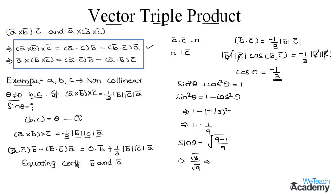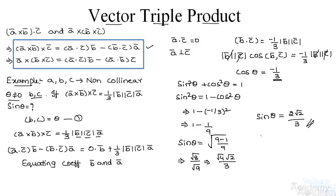We can write √8 = √4 · √2 = 2√2, and √9 = 3. Therefore sin θ = 2√2 / 3. This was the basic introduction to the vector triple product. Hope you understood the concept. Subscribe for more videos on our channel, VTC Academy. Have a nice day.